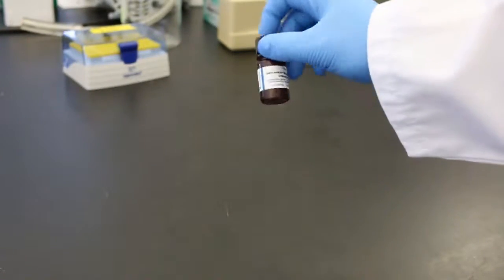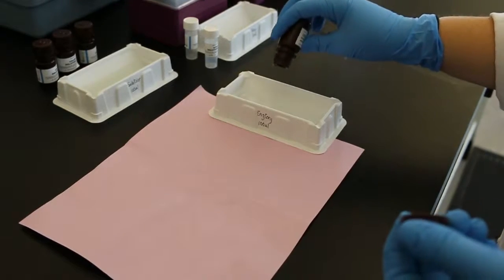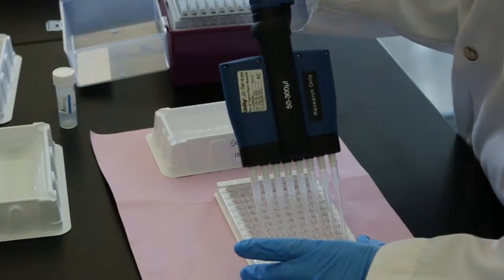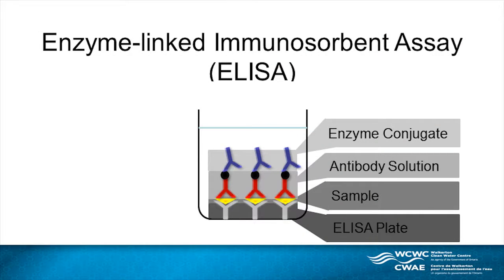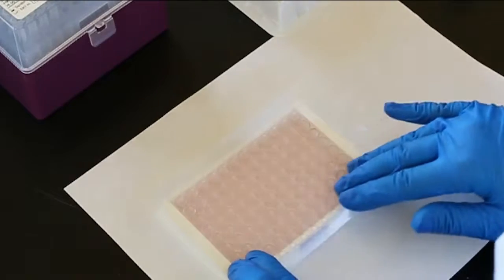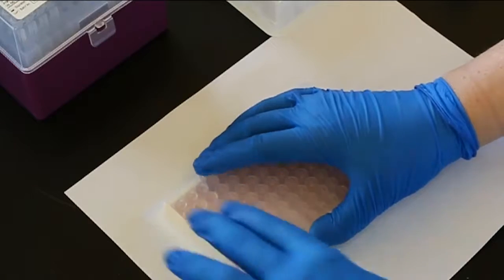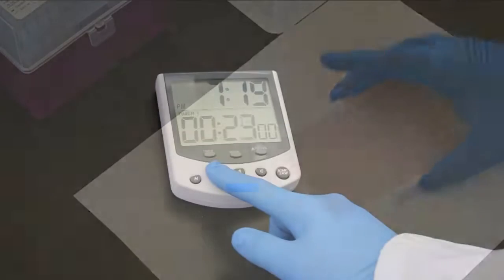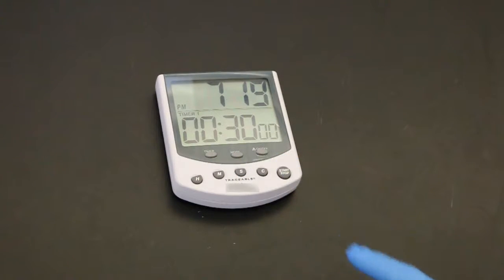The enzyme conjugate solution is inverted several times and poured into a clean tray. 100 microliters of enzyme conjugate solution is added to all of the wells using a multi-channel pipette. The wells are covered again with parafilm or tape and mixed by moving the plate in a circular motion on the benchtop for 30 seconds. The plate is incubated at room temperature for 30 minutes.